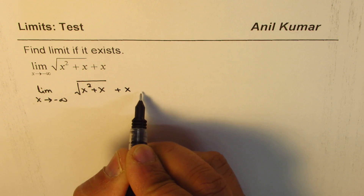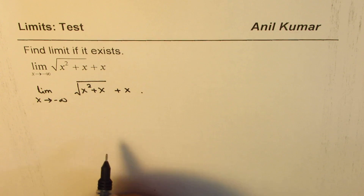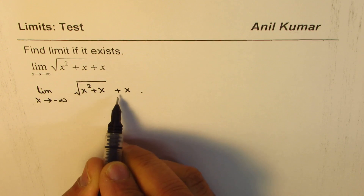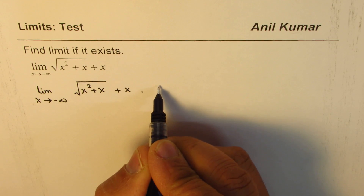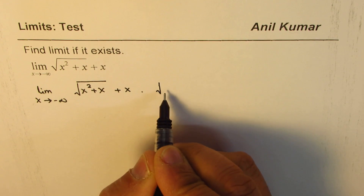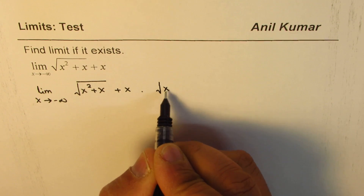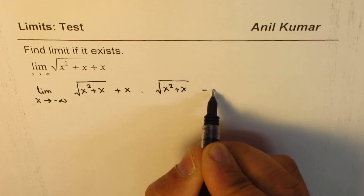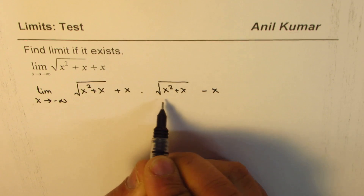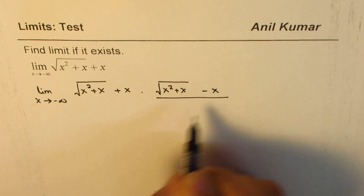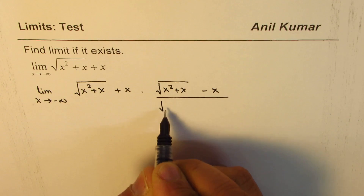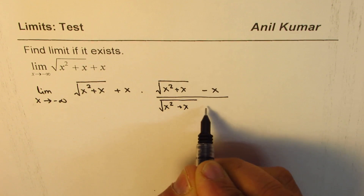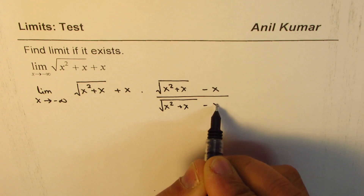To rationalize, I need to multiply and divide by its conjugate, which will be square root of x squared plus x minus x, divided by square root of x squared plus x minus x.